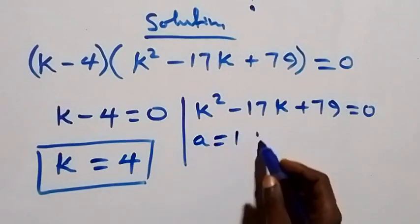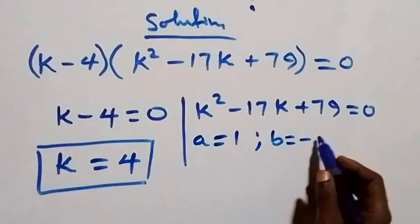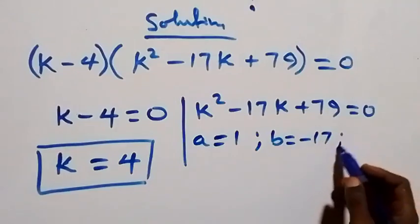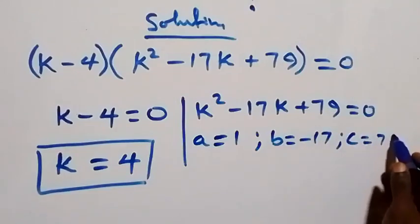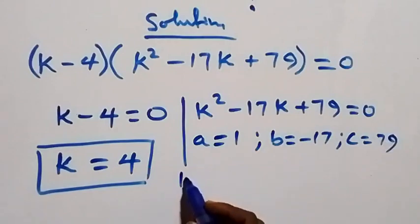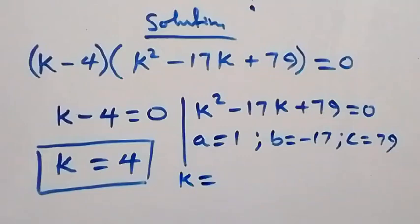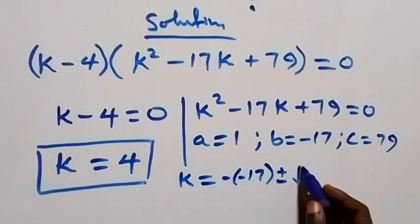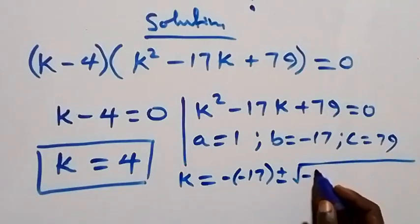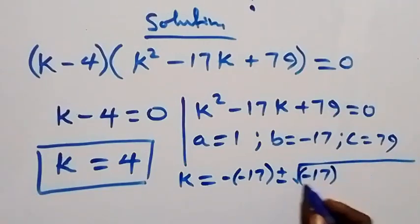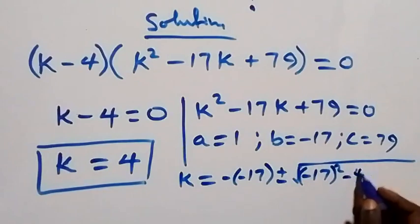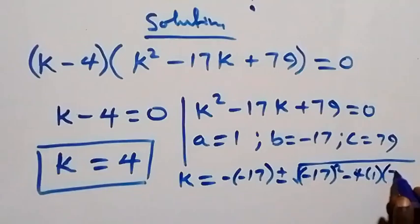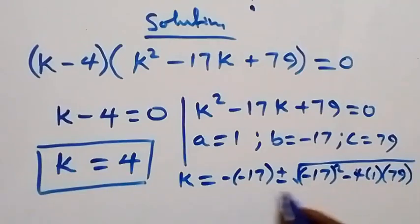For the quadratic k squared minus 17k plus 79 equals zero, we have a equals 1, b equals minus 17, and c equals 79. Using the quadratic formula, k equals minus minus 17 plus or minus the square root of minus 17 squared minus 4 times 1 times 79, all over 2 times 1.